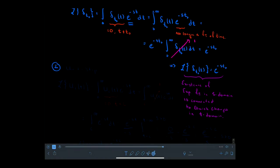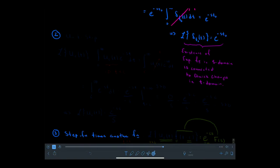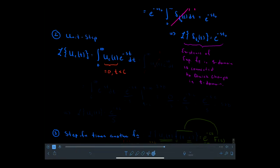For part two, let's take the Laplace transform of the unit step u_c(t). Taking the Laplace transform, I have an integral from 0 to infinity of u_c(t) times e^{-st} dt. This function u equals 0 for all t less than c, so I'm not going to integrate from 0 to infinity — I'll only integrate from time c to infinity. During that time, the step function has switched on to become 1, so I just integrate from c to infinity of e^{-st} dt.